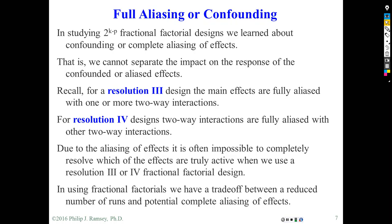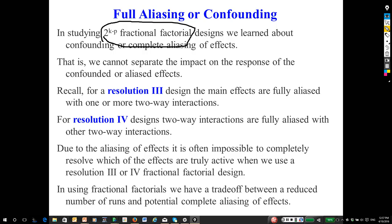At this point, Screening Designs Parts 1 and 2 would be helpful. Recall that in our previous discussion, we spent some time on these 2 to the k minus p fractional factorial designs. That is, we take a full 2 to the k factorial, we split it in half some number of times, and in that way we can run a smaller experiment. Usually people refer to these smaller designs as screening, meaning we have a lot of factors, we don't want to do a lot of runs, and we hope to eliminate or screen out some factors so we can focus on a smaller set.